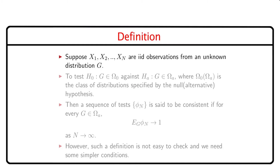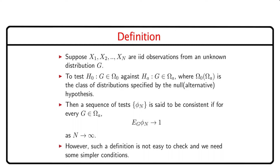Assume x1, x2, ..., xn are iid observations from an unknown distribution g. To test the null hypothesis that g belongs to some Ω₀ against the alternative that g belongs to some Ωa, where Ω₀ is the class of distributions specified by the null hypothesis and Ωa is specified by the alternative, a sequence of tests φₙ is said to be consistent if for every g specified by the alternative hypothesis, the expected value of φₙ tends to 1 as n tends to infinity. Here, the expected value of φₙ under the alternative is the power function of φ. However, such a definition is not easy to check and we need simpler conditions.